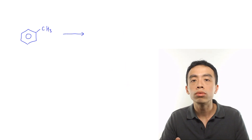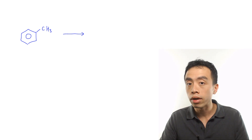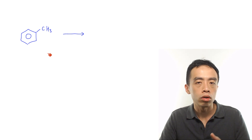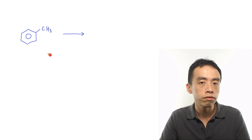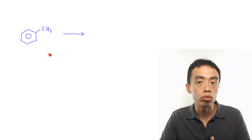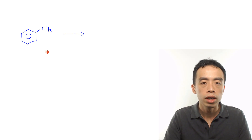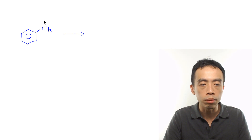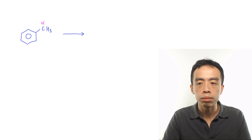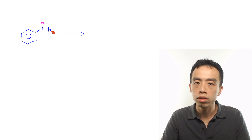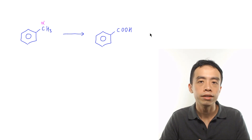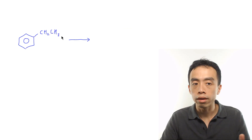Let's go through some examples. If given methyl benzene on oxidation using KMnO4, dilute H2SO4, heat under reflux, we expect it to undergo oxidation to form benzoic acid. The alpha carbon — the carbon directly attached to benzene — has three hydrogens, and we only need one, so the product is benzoic acid.